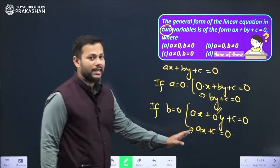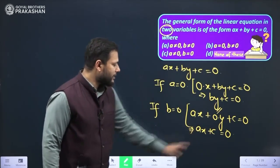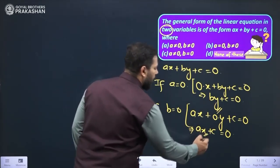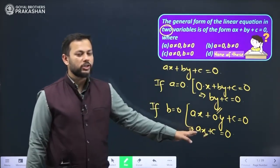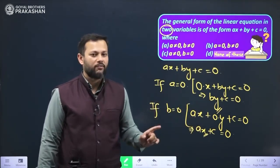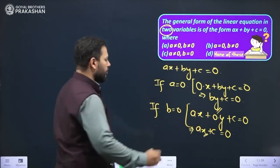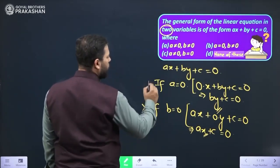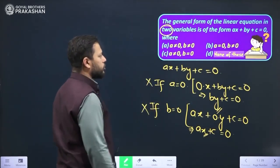So this again happens to be a linear equation. But here I see that there is only one variable that is x. So this equation is the linear equation in one variable. But we need two variables. So we cannot have b equals to 0. We cannot have a equals to 0.